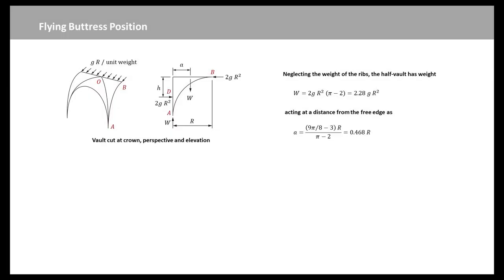Now we can analyze the cross vault. This figure shows the side elevation of the cut vault. And the horizontal force of total magnitude 2 times g times R squared can be seen acting at the level of B. Neglecting the weight of the ribs, the half vault has weight W equal to 2.28 times g times R squared, acting at a distance 0.468 times R from the free edge. This vertical force must be resisted by an equal vertical force W acting at A. And for complete equilibrium, a horizontal force 2 times g times R squared must act at a height h below the top of the vault.